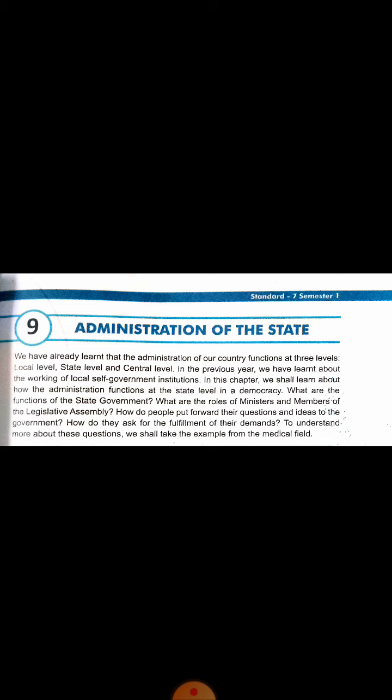In sixth standard we already learned the functions and duties of local self-government, how local self-government members are elected, and how local self-government helps the people. Now in seventh standard we will learn about state government administration — how we the people elect the government and what the functions of the state government are.